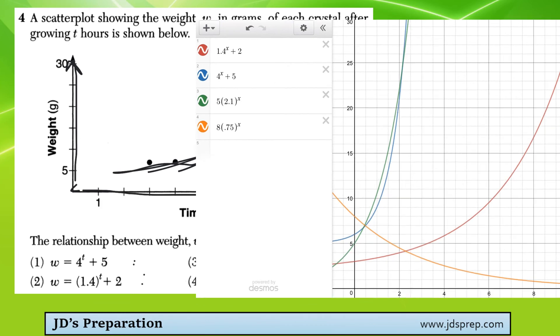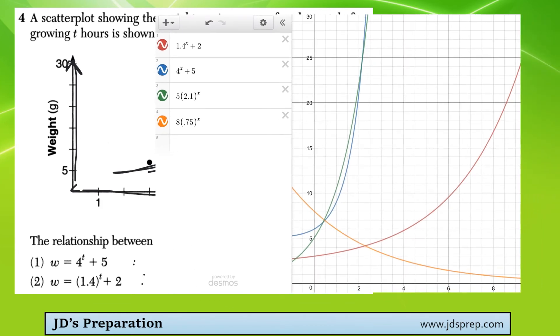And you can see that there's only one that really closely resembles what's happening in that data, and it's this red one here: 1.4 to the power of X plus 2.